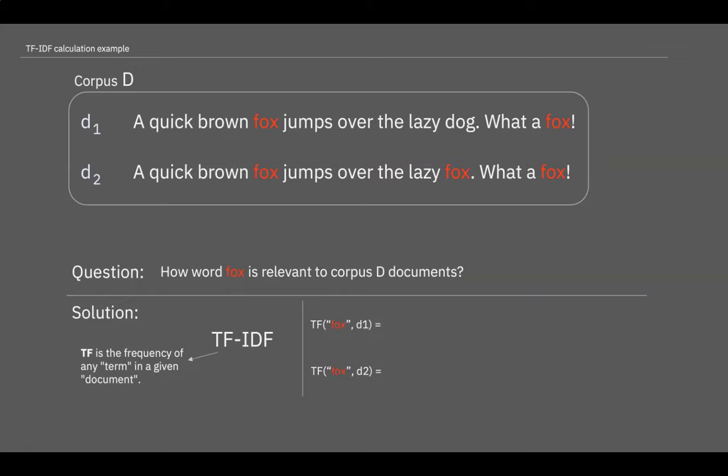So let's calculate. For document number 1 we have 12 words in total. In this context, the word fox occurred two times. Knowing this information we can calculate TF like this: 2 divided by 12 equals 0.17. In the same way we calculate TF for document number 2.